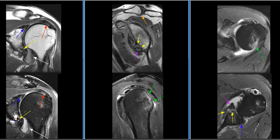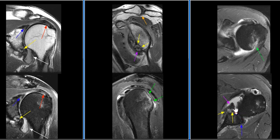There is a fracture of the anterior inferior glenoid fossa with cancellous edema consistent with an acute or subacute Bony Bankart lesion with a bone fragment.